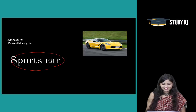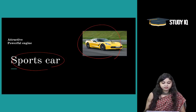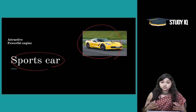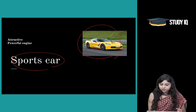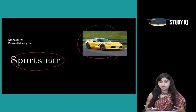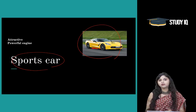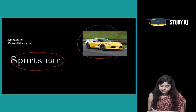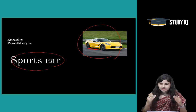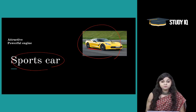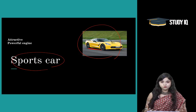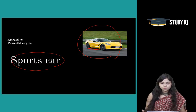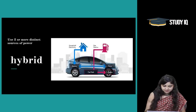Then we have the sports car. As we can see in the image, they are very attractive and have an extremely powerful engine. However, their ground clearance is not that great — SUVs have better ground clearance. Ground clearance refers to the car's height from the ground. Sports cars are very, very attractive and many people aspire to own one.